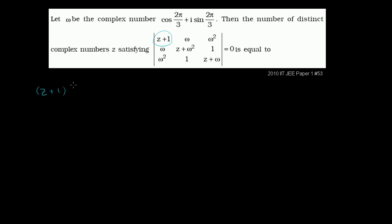Let's evaluate the determinant. Starting with the first term, it's going to be that term times the determinant of the sub 2 by 2 matrix. So it's going to be (z+1) times [(z + ω²)(z + ω²) times (z + ω) minus 1]. This is the sub 2 by 2 determinant, and that's multiplied by z+1.